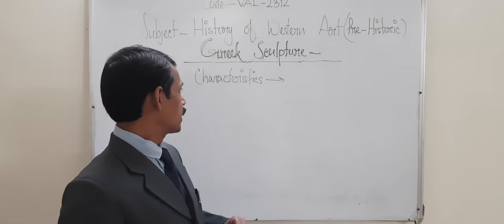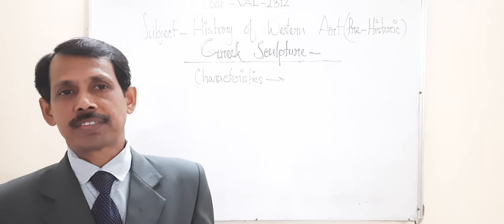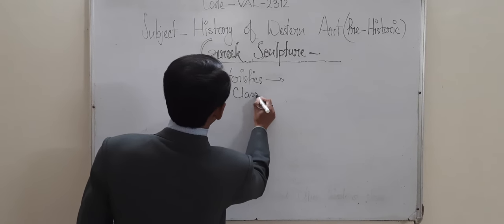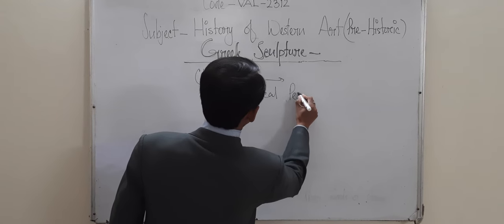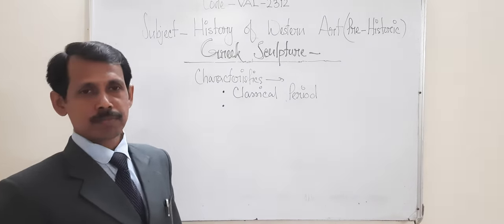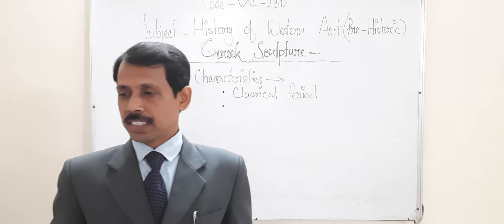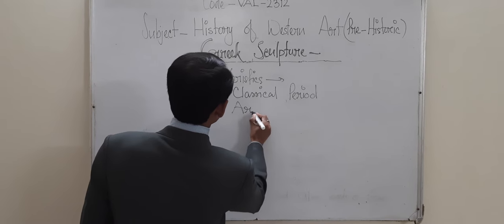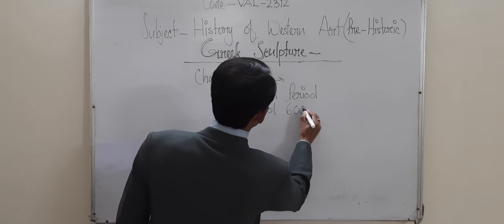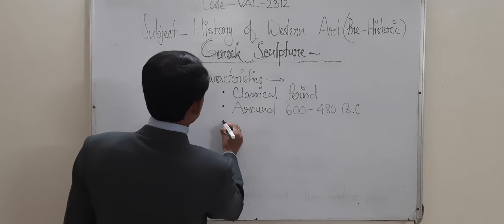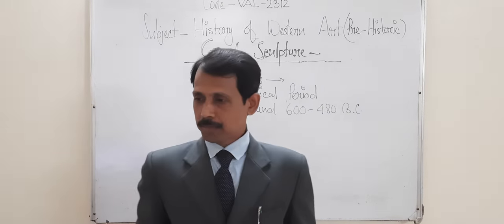Now talking about the characteristics of Greek sculpture: the first point is that it belongs to the classical period. The second characteristic is that it started from around 600 to 480 BC.